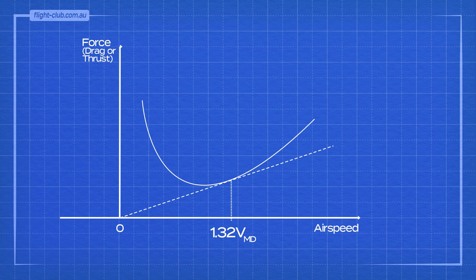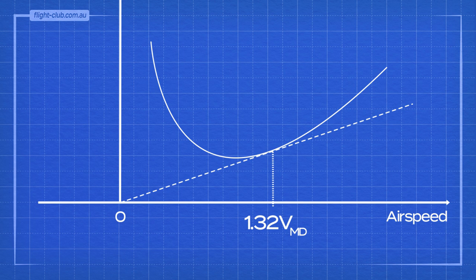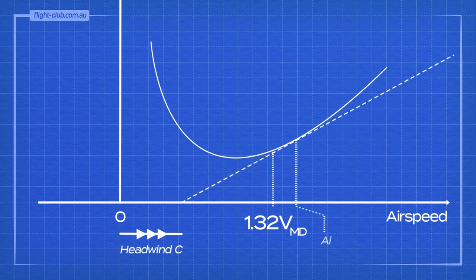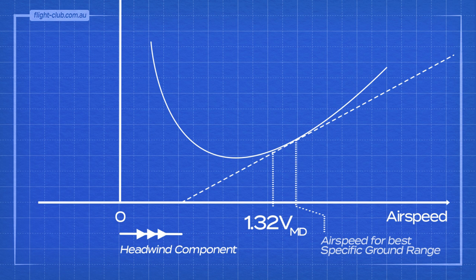In nil wind, specific air range equals specific ground range. In a strong headwind, however, the tangent must be drawn from a new origin to obtain the airspeed for best specific ground range. The tangent drawn from this new origin touches the curve at a higher airspeed than in nil wind. This shows that higher airspeed gives better specific ground range in a headwind, because flying faster minimises the time of exposure to the negative effects of headwind.